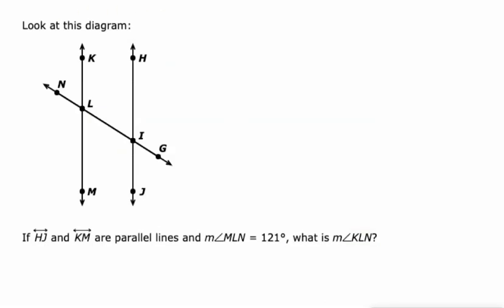Let me show you some different examples. Here we've got KM and HJ are parallel, cut by this transversal NG. So a lot of those angles are going to be created again — all of them actually. The measure of MLN is 121 degrees.